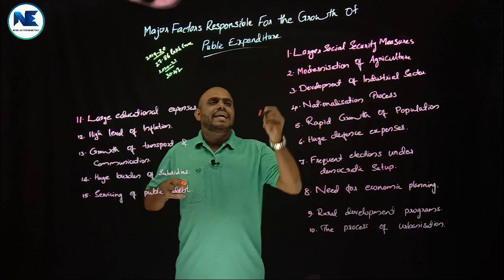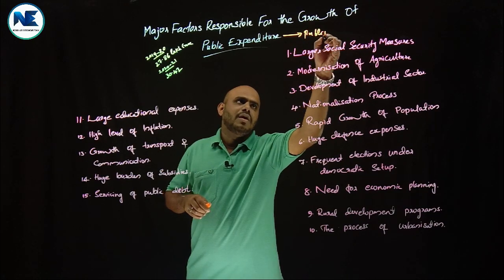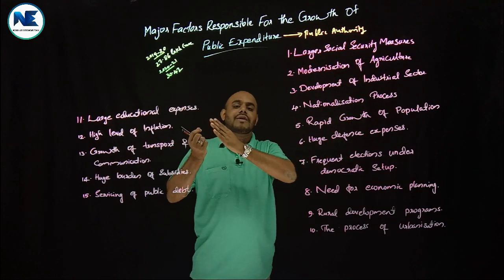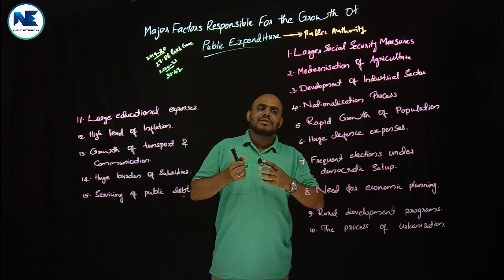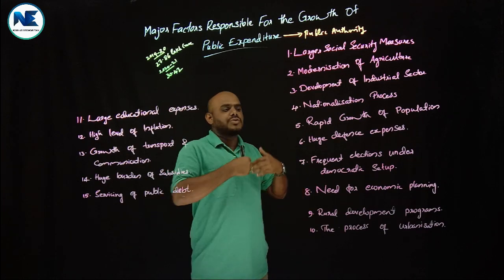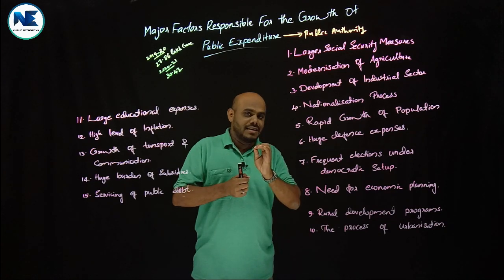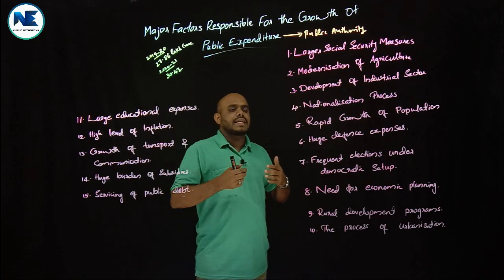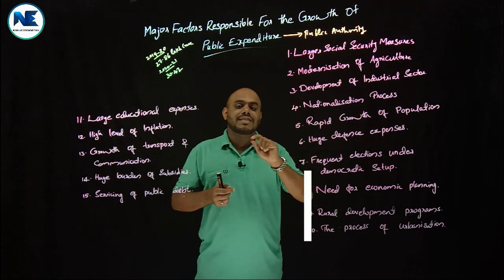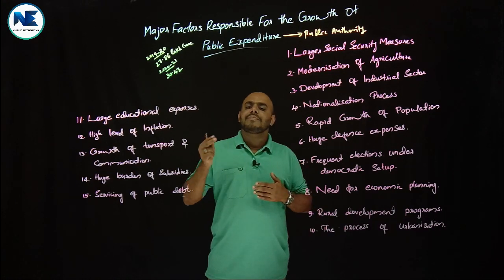Public expenditure is the expenses of the public authority — that is the simple point. We have already discussed public revenue, government taxes, and other non-tax sources. The government mobilizes these to spend for the welfare of the people and the benefit of society. In the 19th century, classical economics perspective, the role of government was very minimum — the laissez-faire system — in which the state is regarded as a police state.